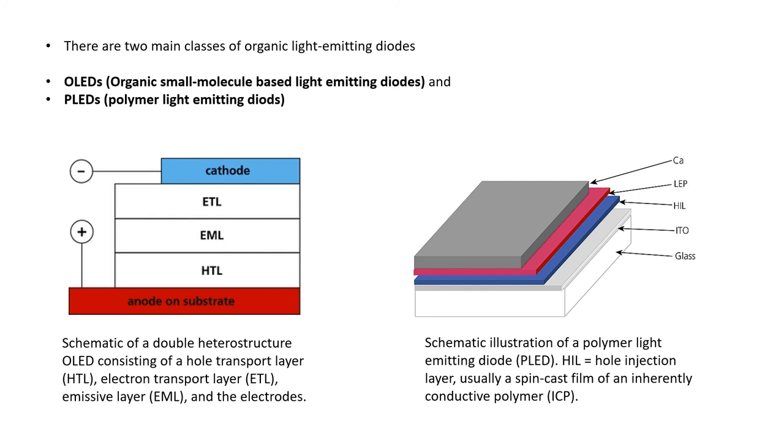There are two main classes of organic light emitting diodes: OLED or organic small molecule-based light emitting diodes, and PLED, that is polymer light emitting diodes. A typical double heterostructure small molecule OLED consists of three organic layers sandwiched between the electrodes. The organic layers adjacent to the cathode and anode are the electron transport layer and the hole transport layer respectively. The emissive layer usually consists of light emitting diodes or dopants dispersed in a suitable host material, often same as HTL or ETL material.